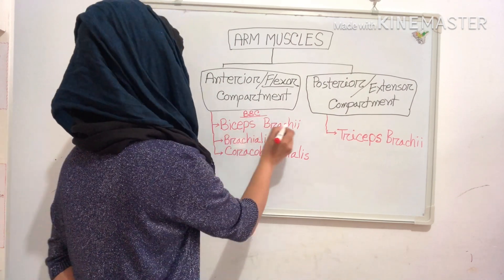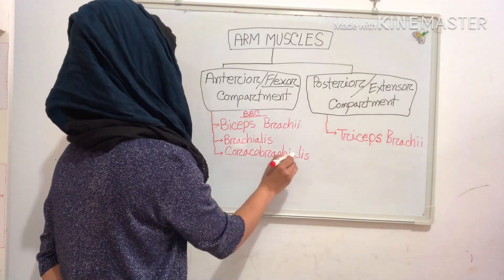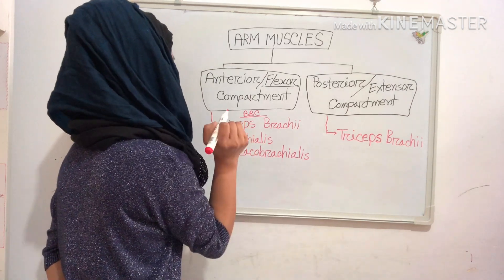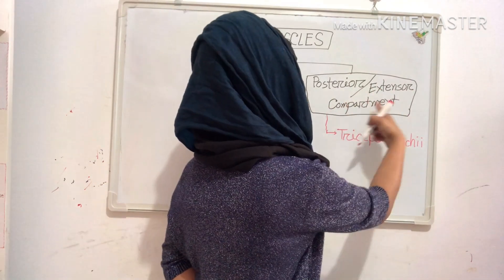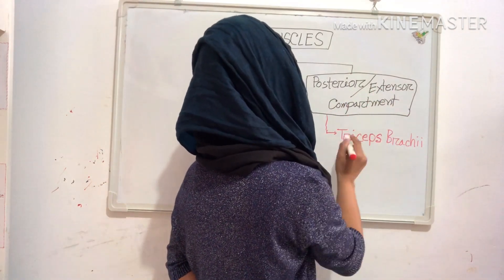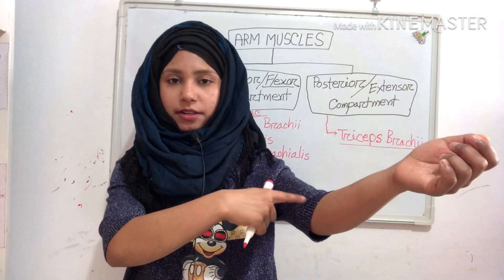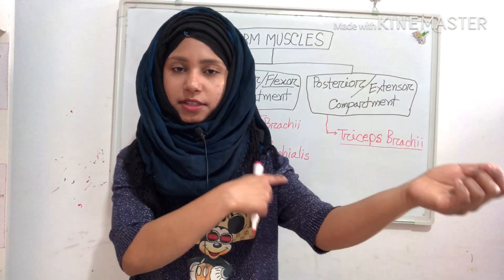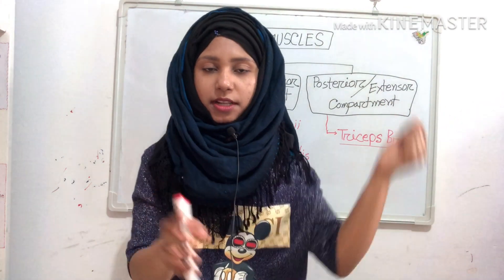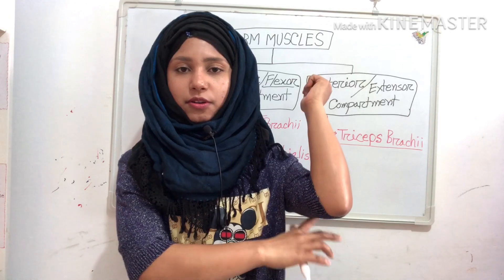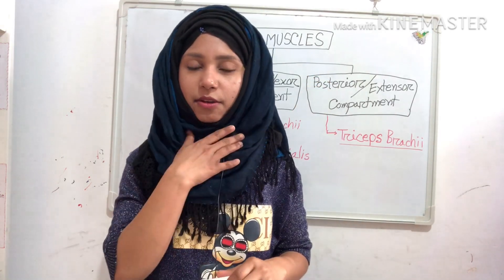BBC means biceps brachii, brachialis, and coracobrachialis. Our posterior or extensor compartment has only one muscle: triceps brachii. So the anterior compartment has three muscles and the posterior compartment has only one muscle. Now we will see their origin and insertion.